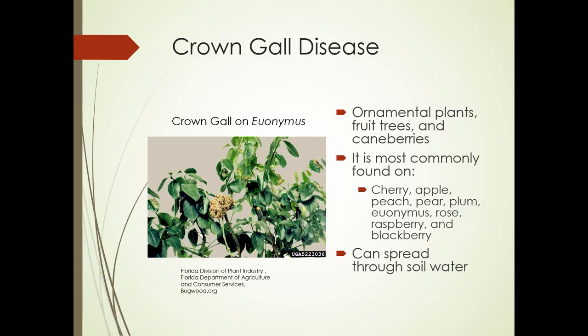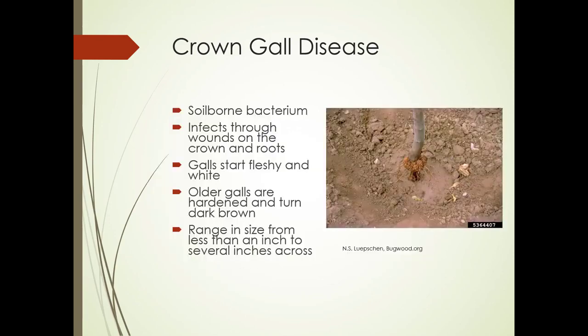This is what crown gall looks like on Euonymus fortunei. It's a soil-borne bacterium that comes in through wounds on the crown and roots. The galls start out fleshy and white. The picture here shows a crown gall on apple — it's an older gall, so it's hardened and turned brown. It can range in size from less than an inch to several inches across.